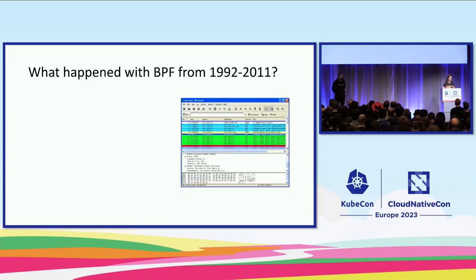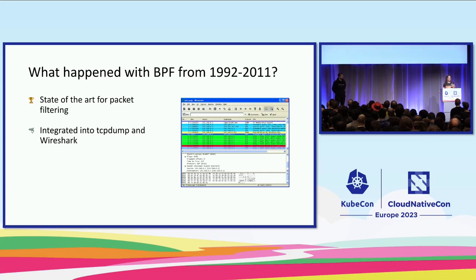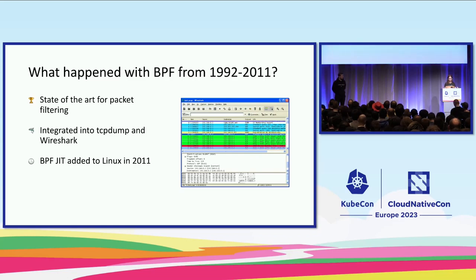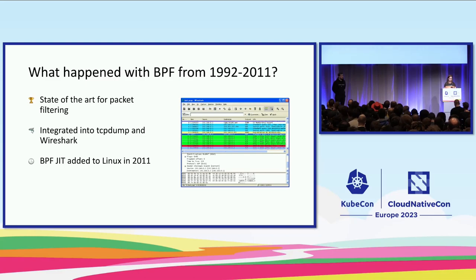In that long period from 1992 to 2011, BPF was considered the state-of-the-art for packet filtering. It was integrated into tcpdump and Wireshark. Eventually the just-in-time compiler for BPF, which made it significantly more performant, was added to Linux in 2011. Everything changed in 2014.